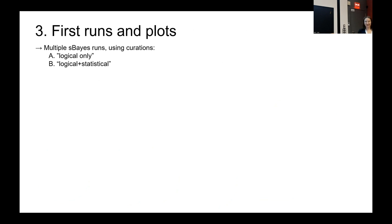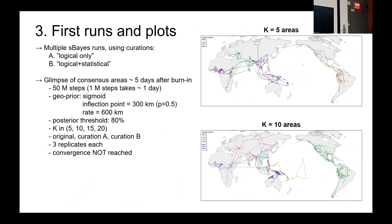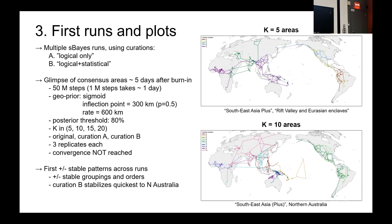With all of this, we are ready to launch first runs in S-BASE, which we do for curations A and B across multiple cluster numbers in multiple replicates to ensure that whatever we see is a stable result. We have only started doing this and cannot present any final results or converged runs yet, but I can show some patterns that have been more or less stable across what we have seen so far. At the top you see a more or less typical plot of K equals 5 areas, and at the bottom K equals 10 areas. These runs have not converged and are still running, so the patterns could change within two weeks.